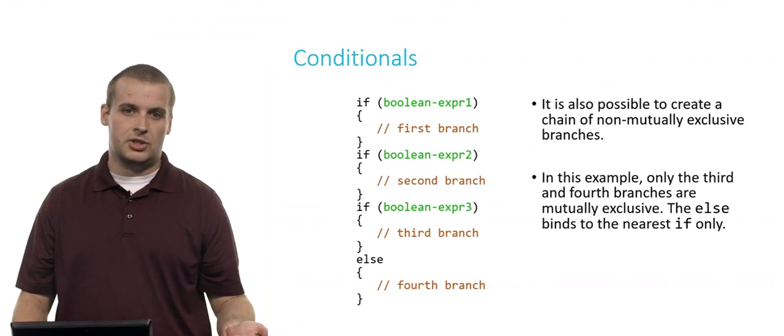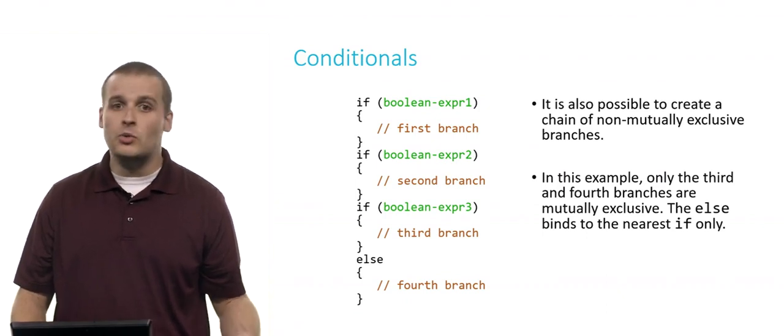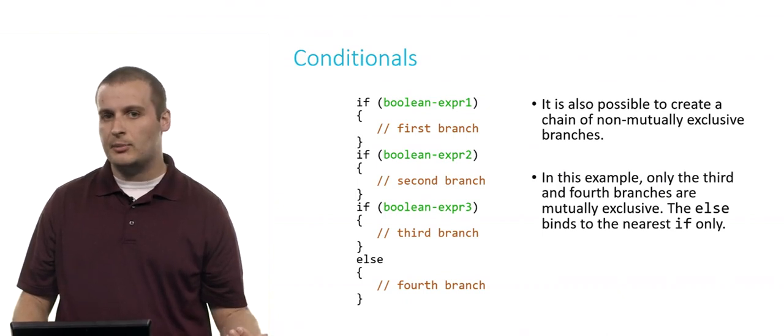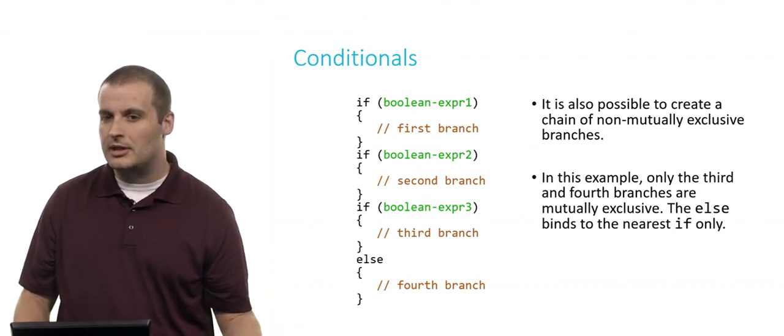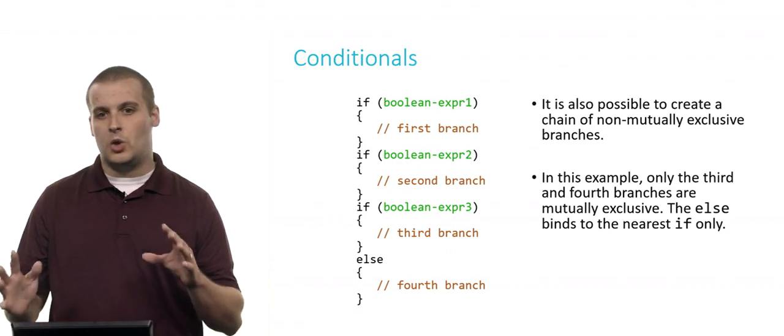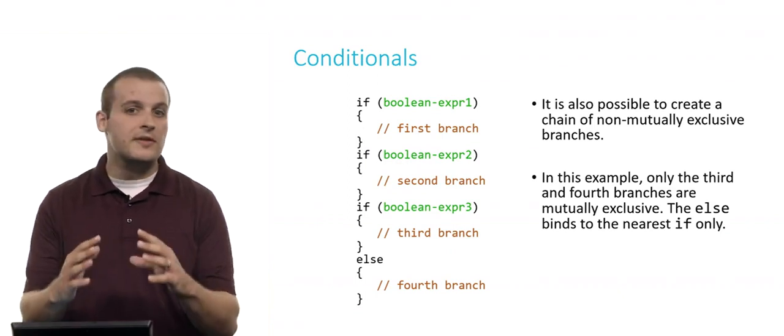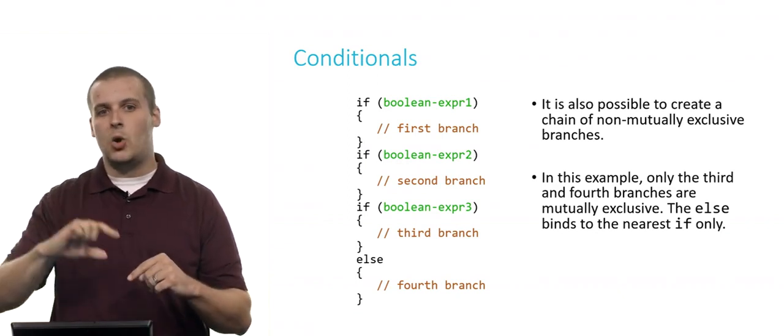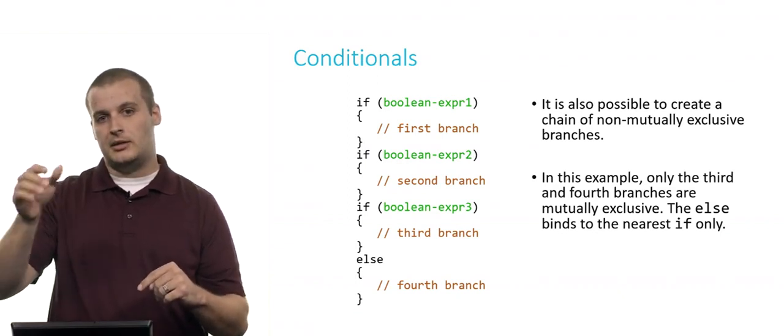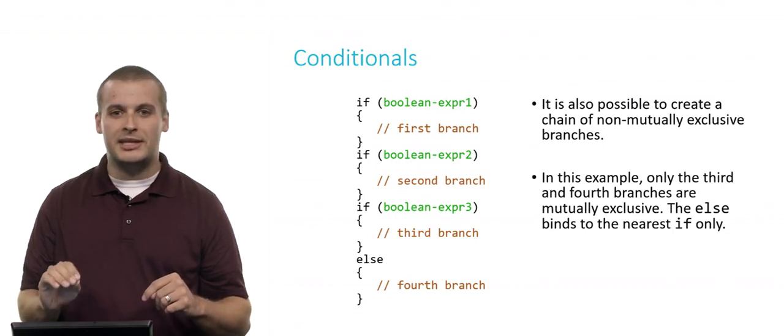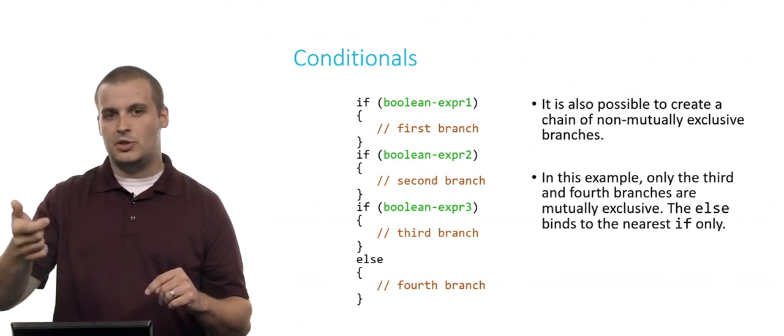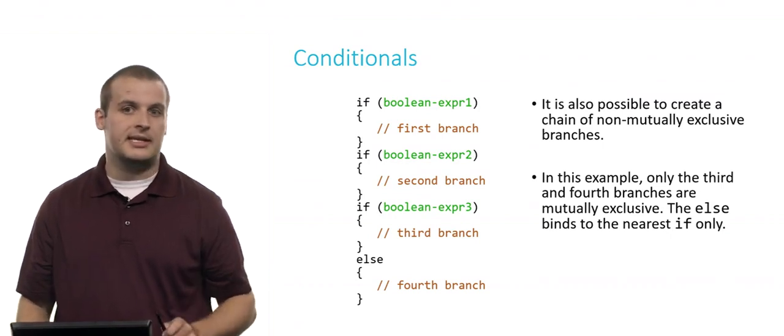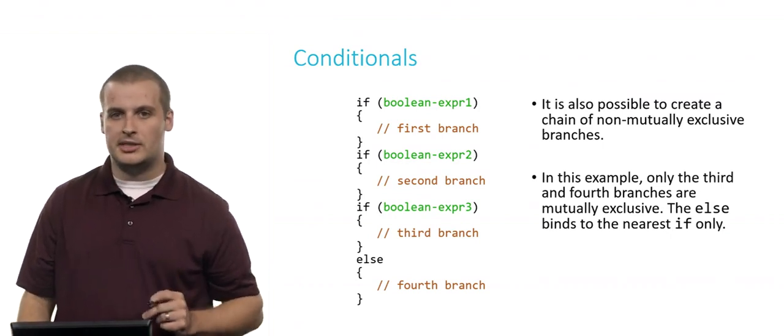Or perhaps you satisfy the first condition and the second condition, but you don't satisfy the third condition. In this case, you go down the first branch and the second branch, and then the fourth branch. The reason for this is that the else will only bind to the nearest if. So even though there's an else here, that doesn't necessarily create a mutually exclusive chain of everything. So it is possible and sometimes quite useful to create a chain of not mutually exclusive branches.